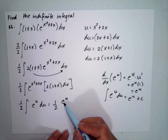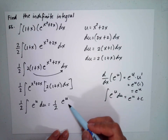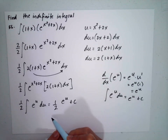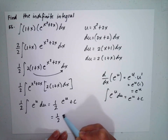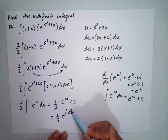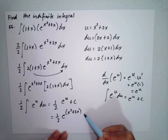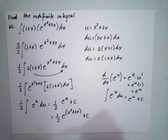So our final answer is one half e to the x squared plus 2x, plus C.